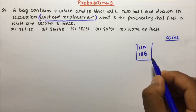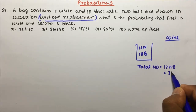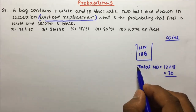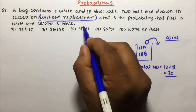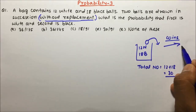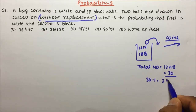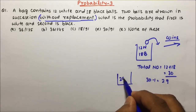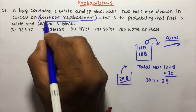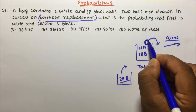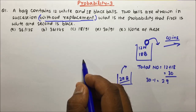You have to understand what 'without replacement' means. The total number of balls is 12 plus 18, which is 30 balls. Two balls are drawn in succession, so one ball is drawn first and then — without replacement — that ball is thrown somewhere else and not put back. So when the second ball is drawn, there are only 30 minus 1 = 29 balls remaining.